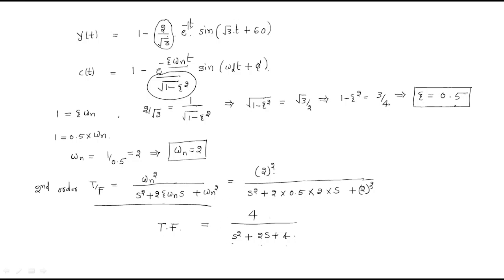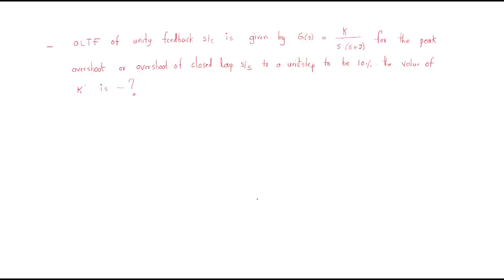This is an important model: when given the output and input, find the transfer function by comparing with the standard second-order formula to find ζ and ωₙ, then substitute. Next, Problem 2: the open loop transfer function of a unity feedback system is G(s) = k / [s(s+2)].